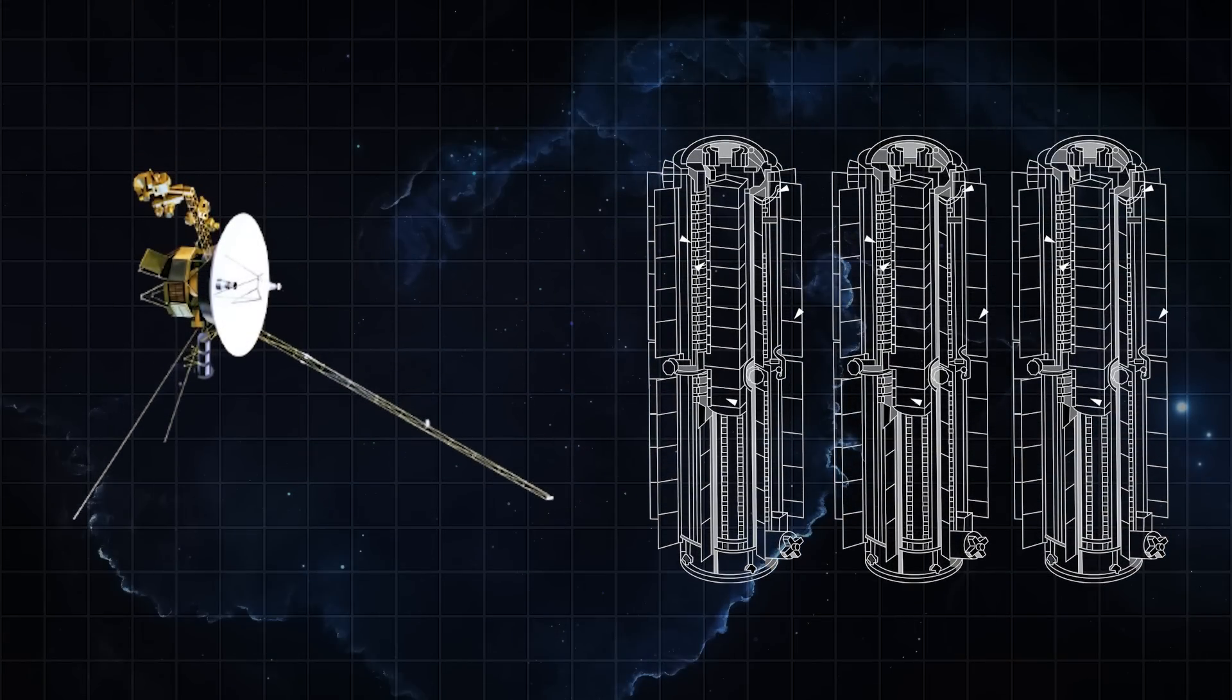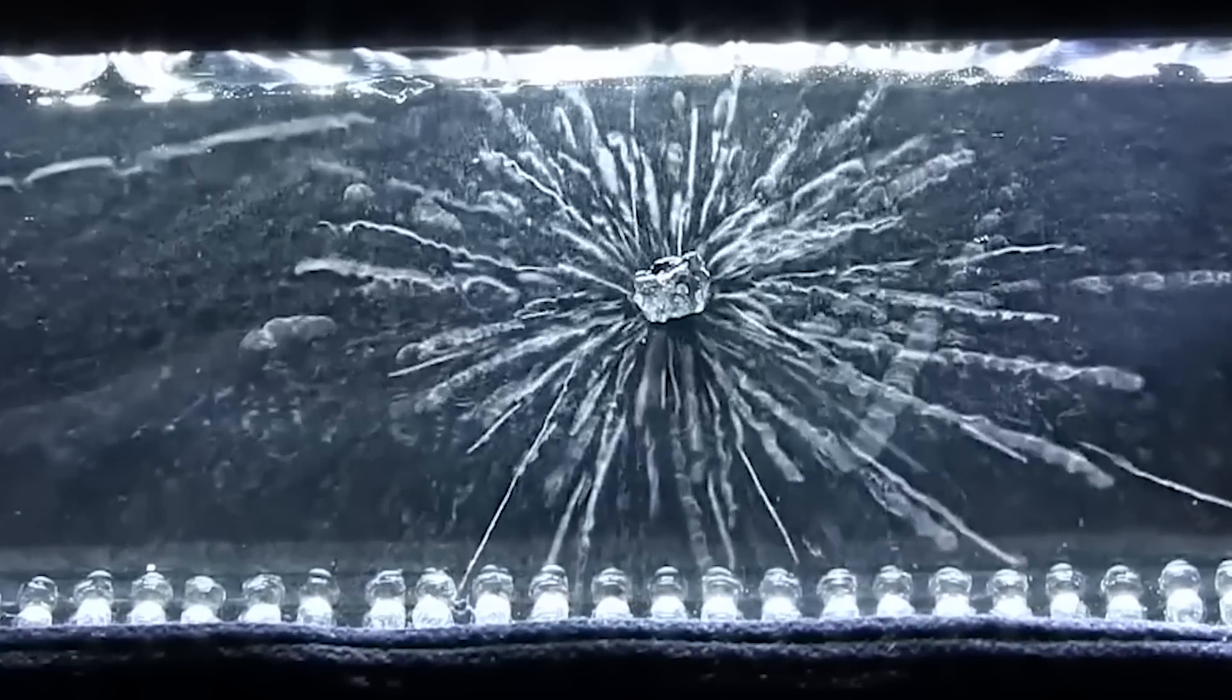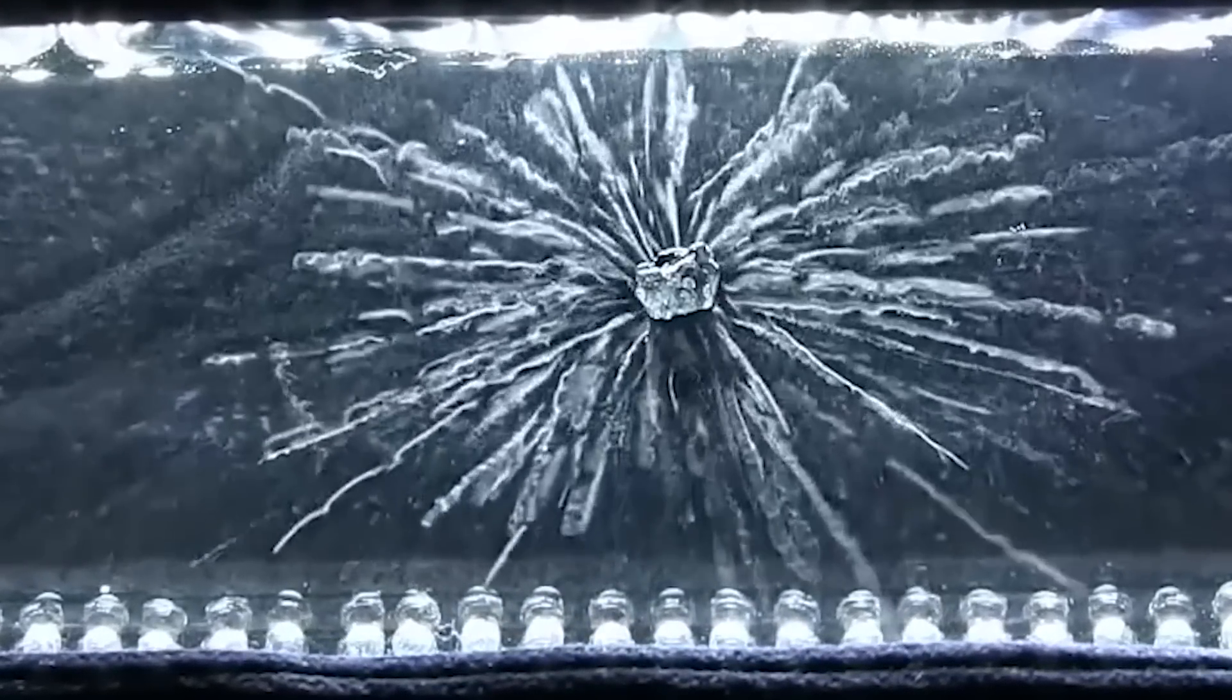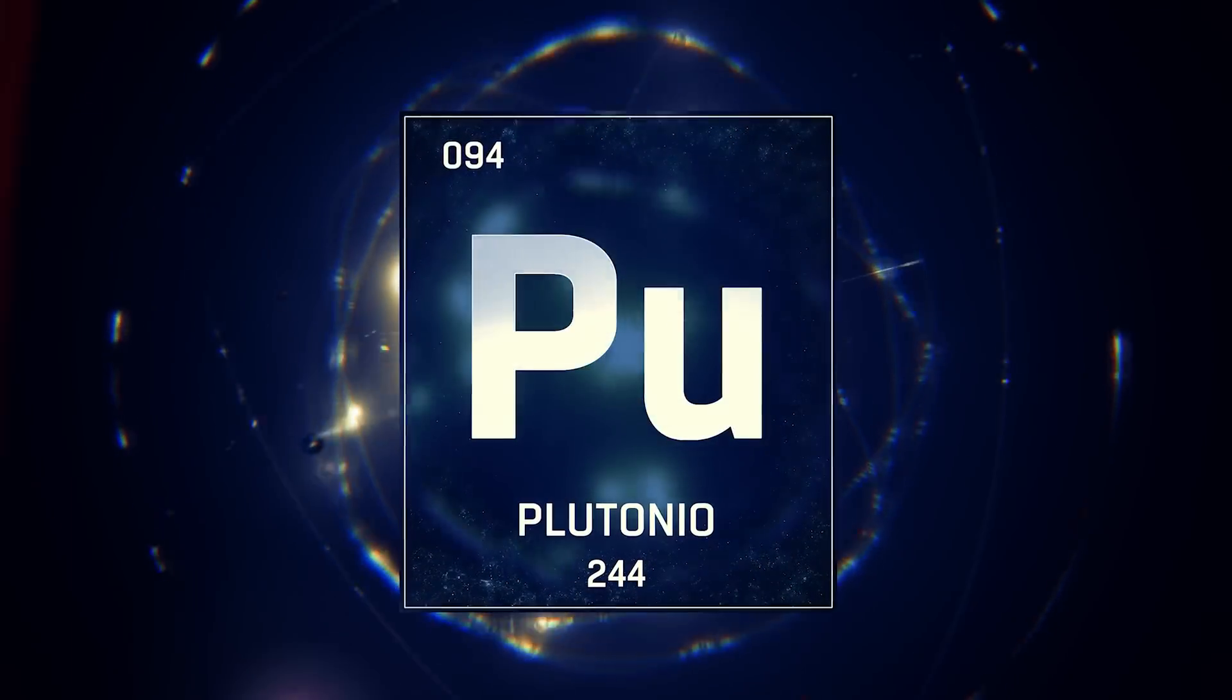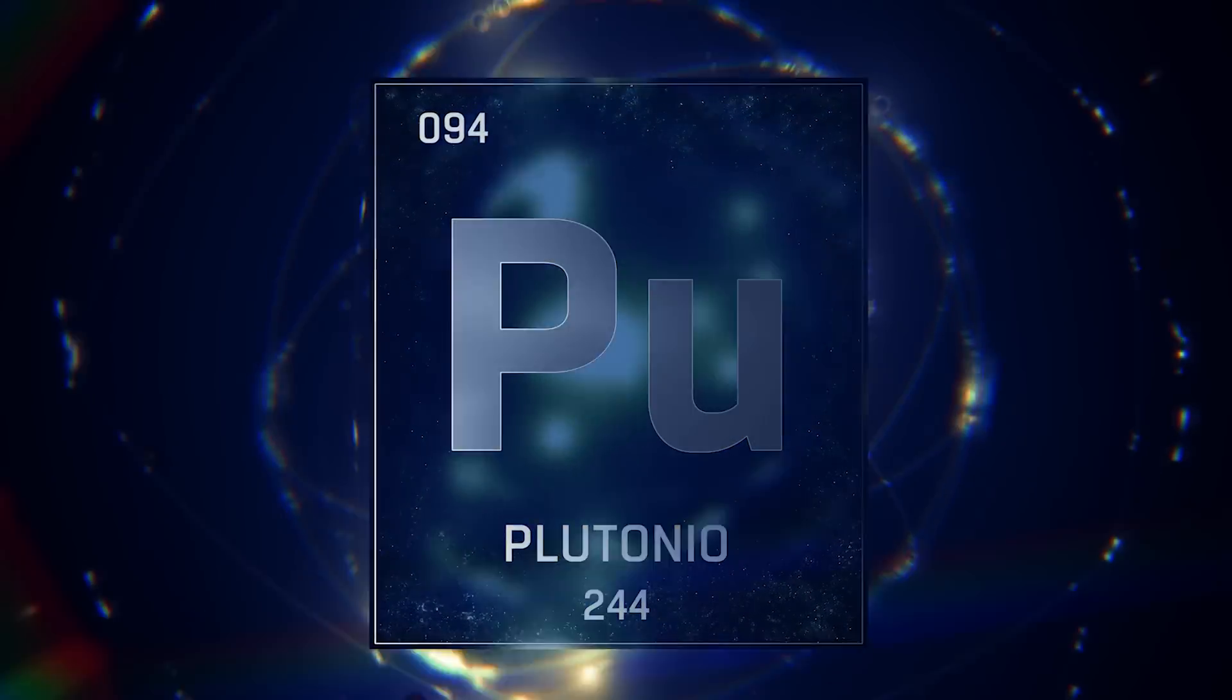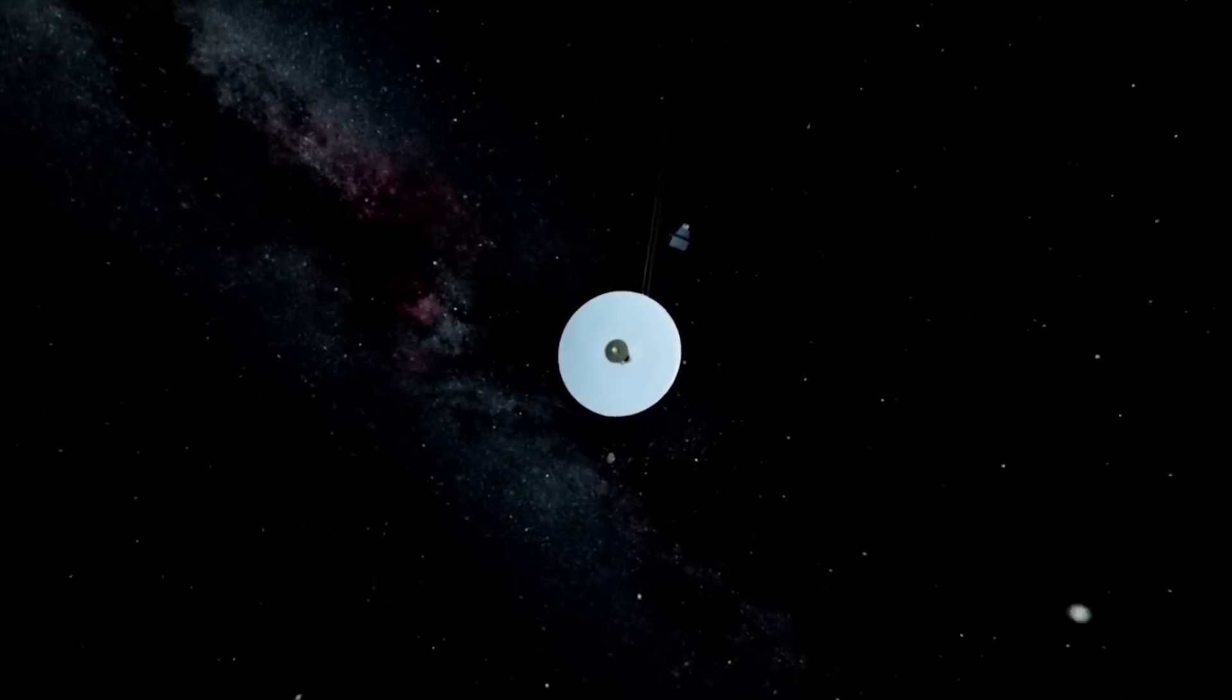Each probe is fitted with three distinct RTGs, all of which use powerful plutonium as their fuel source. This was a remarkable choice because as the plutonium isotope decays over time, it releases significant levels of heat that each probe then converts to electrical energy. But regardless of the highly efficient nature of this energy source, it can only last for so long, as scientists have already determined that the Voyagers are currently running on less than 50% of their original power.